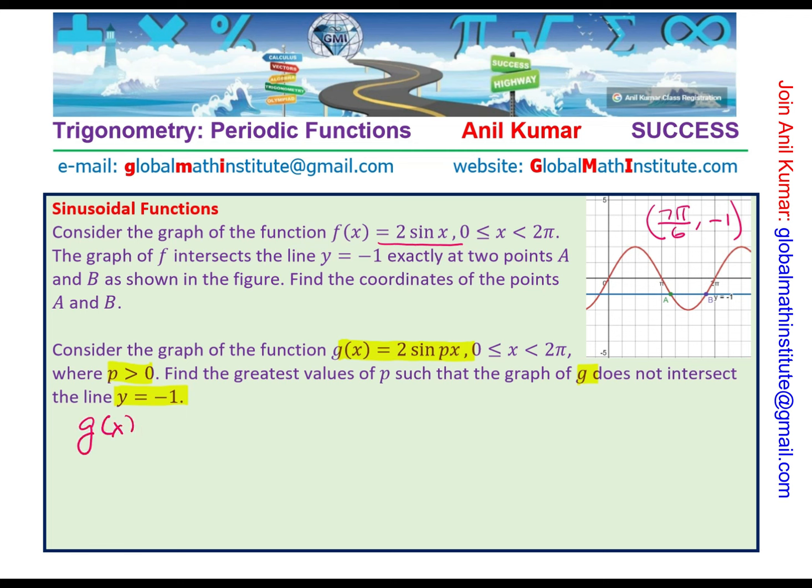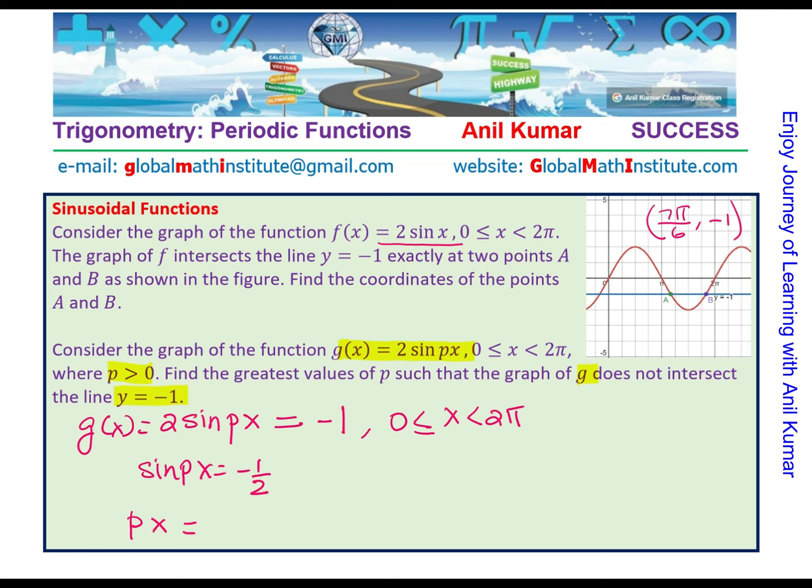Now, we are looking into g(x) = 2 sin px. And we do not want any solution for this to be -1 when x is between 0 to 2π. In the question 2π was not included. Now, we know one thing that the solution of this equation indeed is sin px = -1/2, which means px will be equal to 7π/6.